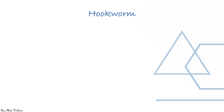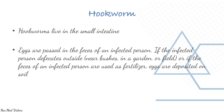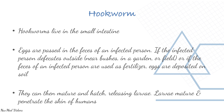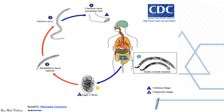Let's have a look at hookworm. What is hookworm? Hookworms live in the small intestine. Eggs are passed in the faeces of an infected person. If the infected person defecates outside near bushes, in a garden, or a field, or if the faeces of an infected person are used as fertilizer, eggs are deposited in the soil. They can then mature and hatch, releasing larvae, which mature and penetrate the skin of humans.